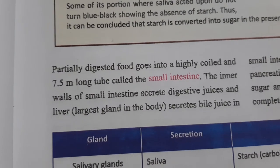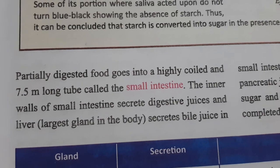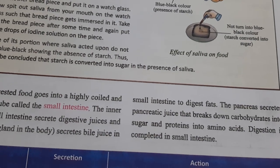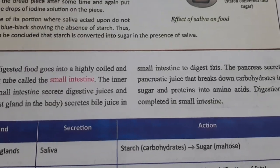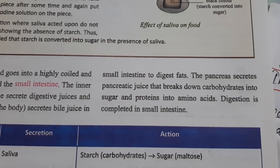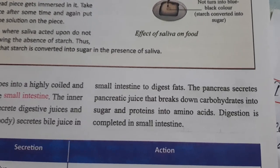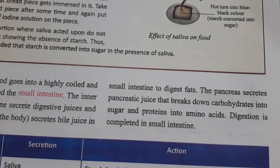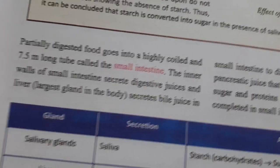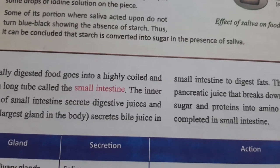The inner walls of the small intestine secrete digestive juices. The liver, which is the largest gland of the body, secretes bile juice into the small intestine to digest fats. The pancreas secretes pancreatic juices that break down carbohydrates into sugars and proteins into amino acids. Digestion is completed in the small intestine. Bile is stored in the gall bladder.